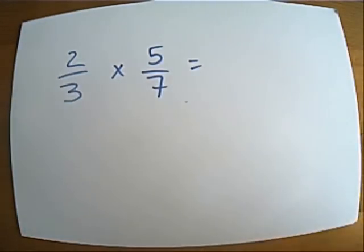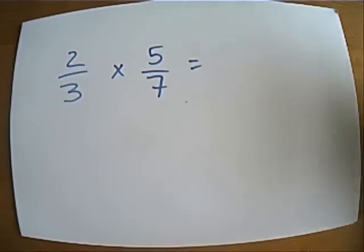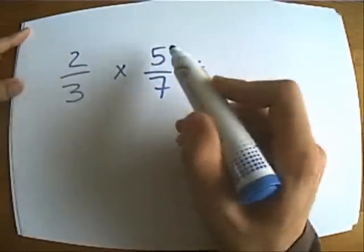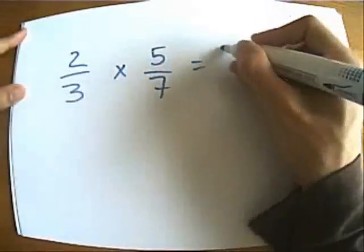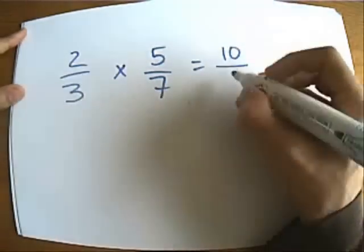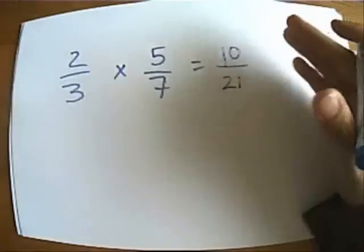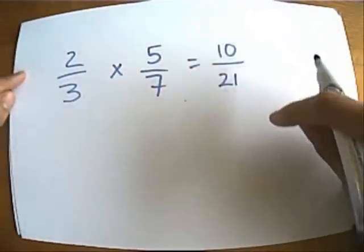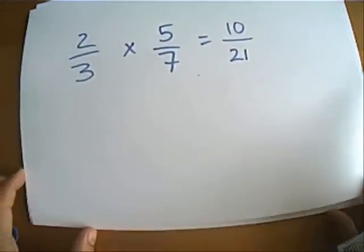by now you're already jumping up and down saying I know how to do that, I'm going to do the two numerators and multiply them together, 2 times 5 is 10, and I'm going to do the two denominators and multiply them together to give me 21, and there's my answer. Can I cancel it down? No I can't, so that is my answer in its simplest form.